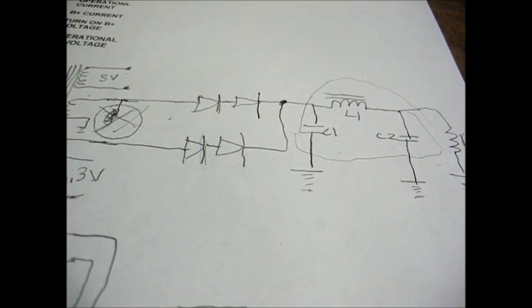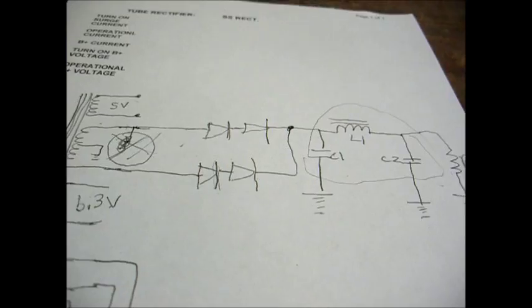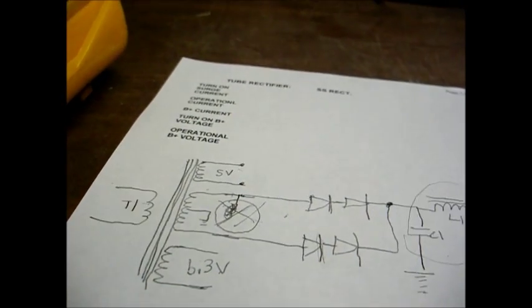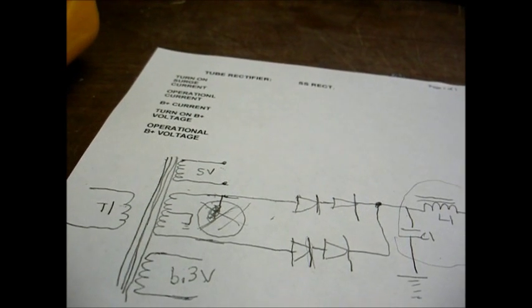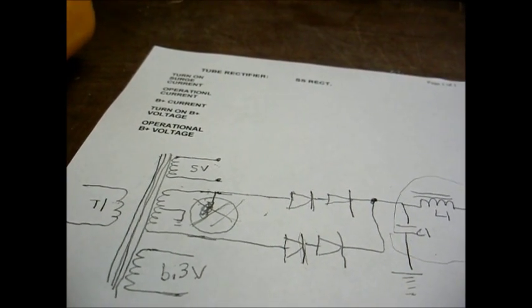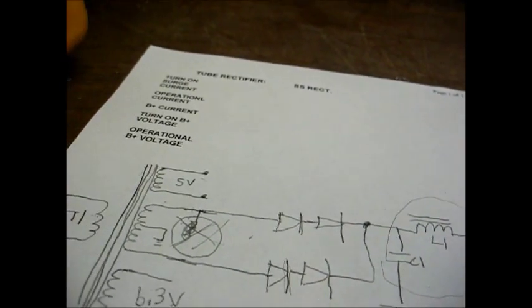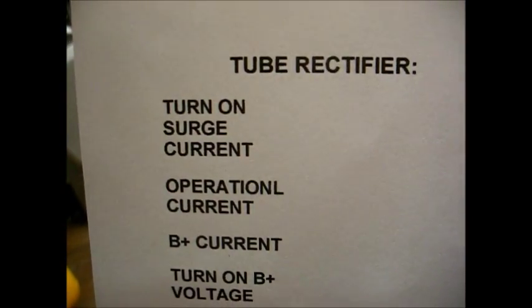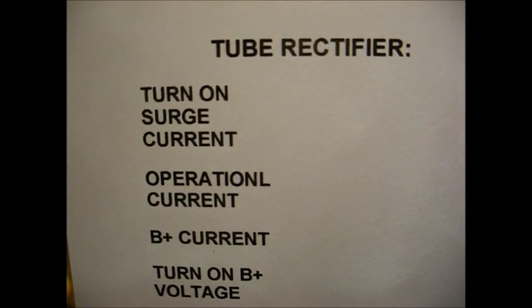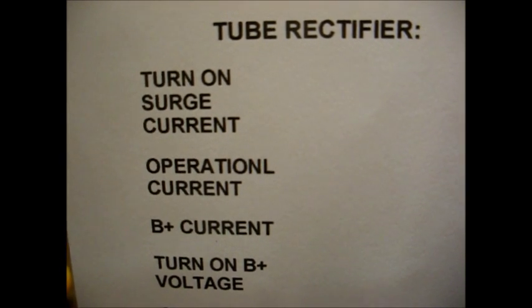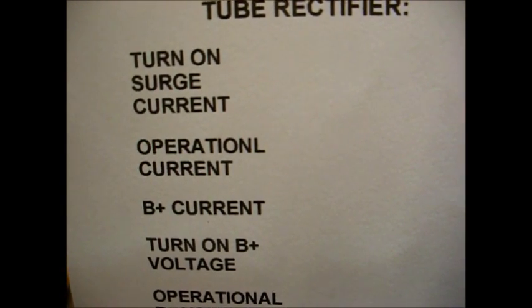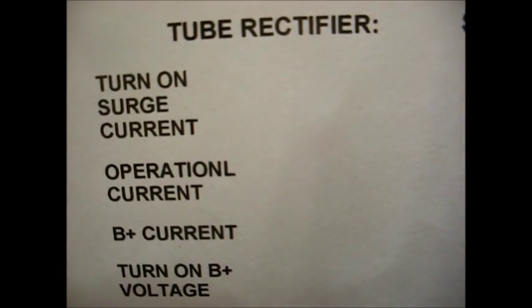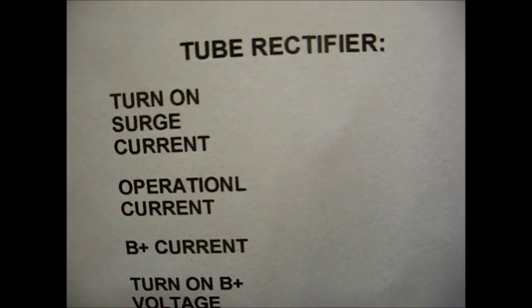Now let's scrounge up something, an old radio or whatever, that uses a 5Y3 rectifier. And we are going to take some voltage and current measurements between the tube rectifier and the solid state rectifier. And then we'll analyze our results. As you can see, I have our little chart here ready to fill out. We'll measure our turn-on surge current, which will be measured at the AC input. We'll be measuring our operational current, which will mean the amount of current that the radio draws while it's in operation.